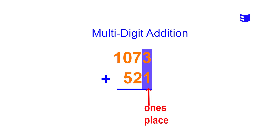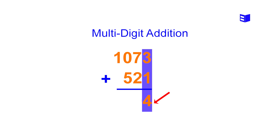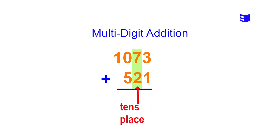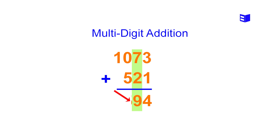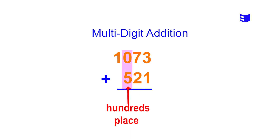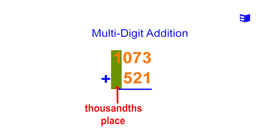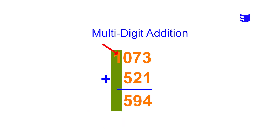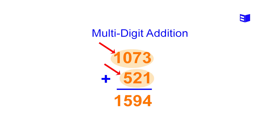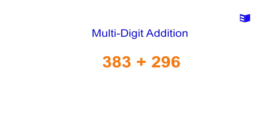We perform addition for each column starting with the ones column: 3 plus 1 equals 4; we put 4 below the horizontal line. For the tens column: 7 plus 2 equals 9; we put 9 below the horizontal line. For the hundreds column: 0 plus 5 equals 5; we put 5 below the horizontal line. For the thousands column, only the number 1 is present, so we write 1 below the horizontal line. We conclude that 1073 plus 521 equals 1594.